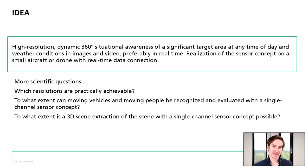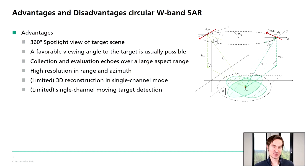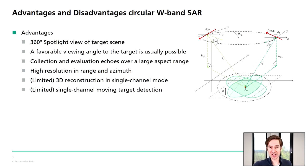Some more scientific questions were: which resolution is practically achievable in this kind of geometry and frequency band? And to what extent can moving vehicles be detected, or to what extent can we extract 3D information? In circular SAR, you have the benefit of a 360-degree spotlight mode. If you are searching for hidden targets, you usually find a favorable viewing angle to track them. You can collect and evaluate echoes over a very large aspect range, and use this information to push your resolution in both dimensions, or process multi-aspect images to detect 3D information or moving objects.